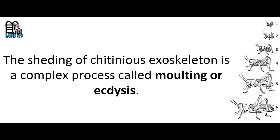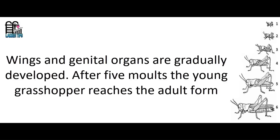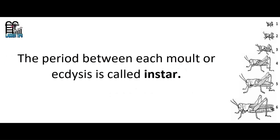The shedding of the chitinous exoskeleton is a complex process called molting or ecdysis. Wings and genital organs are gradually developed. After five molts, the young grasshopper reaches the adult form. The period between each molting or ecdysis is called an instar.